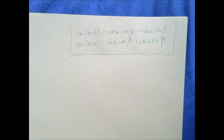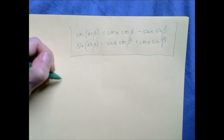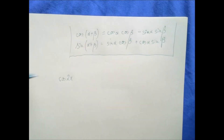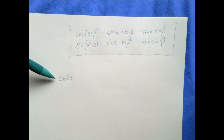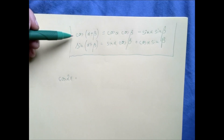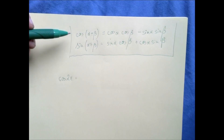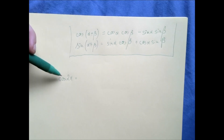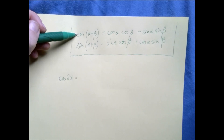Suppose you want to figure out what cosine of 2x is — we would call this the double angle formula. The double angle formula for cosine is basically just a weakening of the sum formula. Because if we know how to add alpha plus beta, we should also know how to add x plus x. We're just going to weaken down the sum formula by writing x whenever we see alpha or beta.